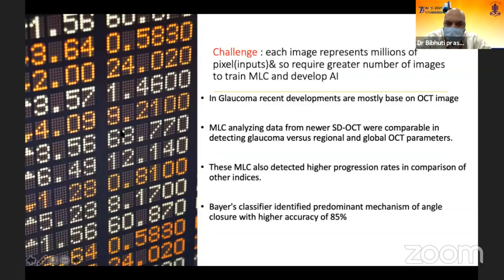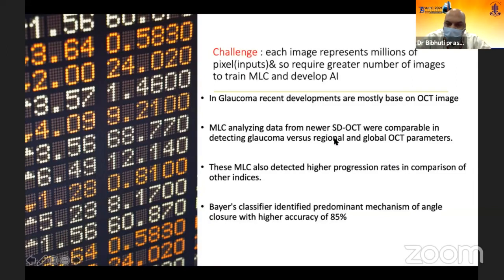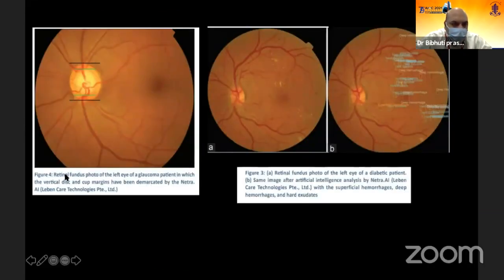The challenge is that each photograph consists of millions of pixels, and converting those into numericals is difficult — it requires training of machine learning calibrators to develop AI. In glaucoma, recent development is mostly based on OCT images, and MLC analyzing data from newer SD-OCT is comparable in detecting glaucoma versus regional or global OCT parameters. The OCT is giving us pictures that are actually converted into numericals, and these numericals help us identify the red and green disease as seen in the printouts. In this image, we can see that Netra AI can detect the outer boundary and the boundaries of the cup.